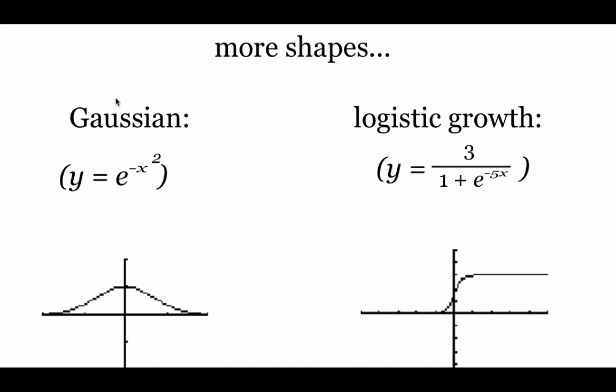Taking a look at a couple more graphs for this Gaussian model—if you've ever heard of a bell curve, that's essentially what's happening here. And if we're looking at this logistic growth, it's flat on the ends, but we can see there's this increase in the middle.